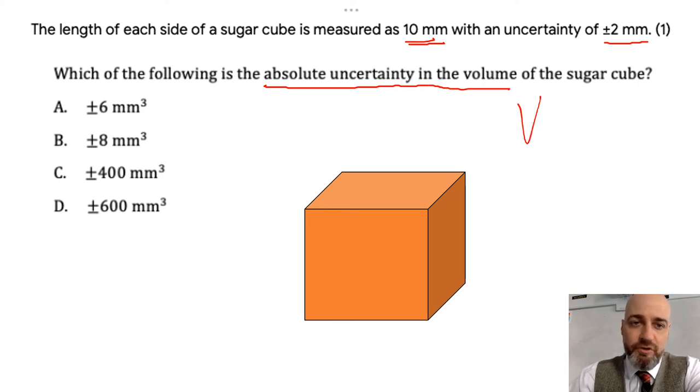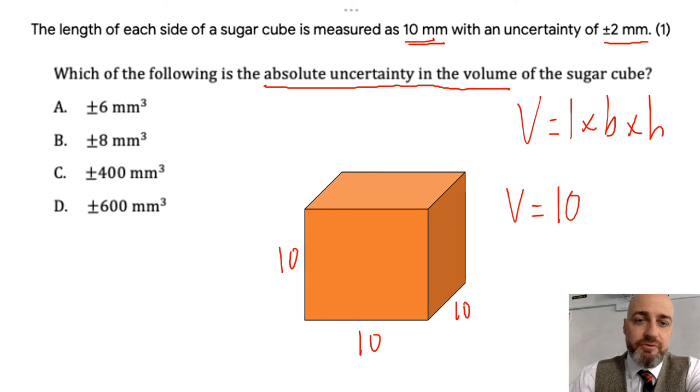As you'll remember, volume is the length times the breadth times the height. So if it's 10 by 10 by 10, that gives us a volume of 1000mm cubed. So that's our actual volume.